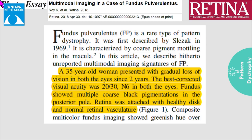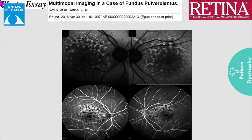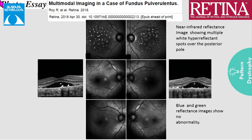An in-house case report on fundus pulverulentis: a 35-year-old lady presented with gradual loss of vision in both eyes. Fundus examination showed coarse pigmented granules in the foveal macular region. Composite multicolor fundus imaging showed a greenish hue at the macula and orange hyperpigmented spots suggestive of RPE pigment alterations. On fundus autofluorescence, there were hyporeflective lesions. On fundus angiography, there was blocked fluorescence. In near-infrared reflectance, multiple white hyperreflective spots were seen over the posterior pole, while blue and green reflectance images showed no abnormalities.